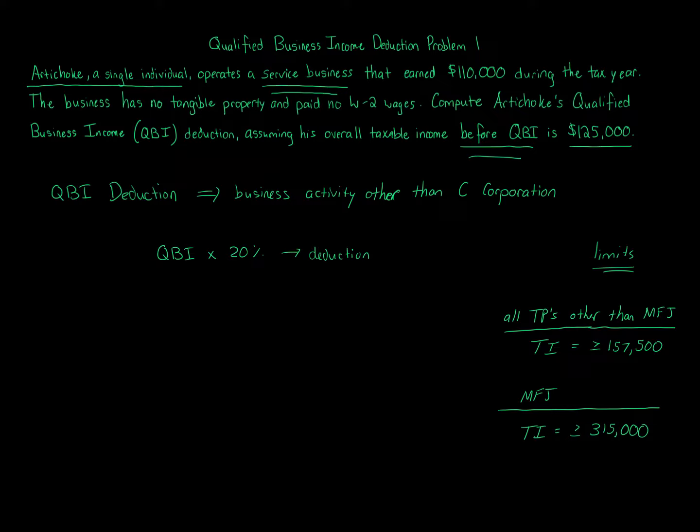All you do is you take the QBI, which here is $110,000. It's the amount of business income during the year. So the service business earned $110,000 of business income during the year. So the QBI here is $110,000. We multiply that by 20%, and that number is going to equal $22,000.